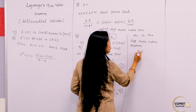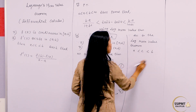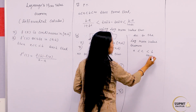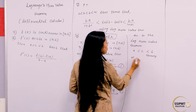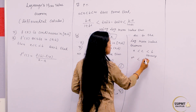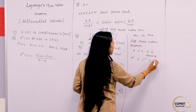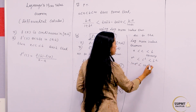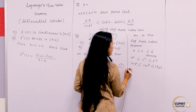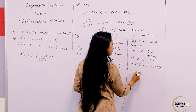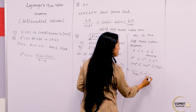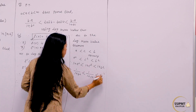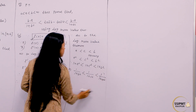Since we know that c is between a and b, therefore on squaring all sides, a square is less than c square and c square is less than b square. Therefore we can write: 1 plus a square is less than 1 plus c square is less than 1 plus b square. Which gives us 1 upon (1 plus b square) is less than 1 upon (1 plus c square) is less than 1 upon (1 plus a square).